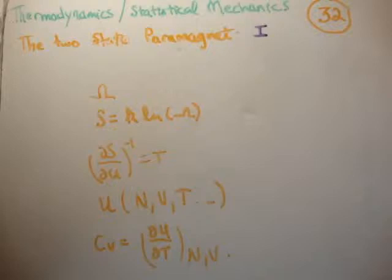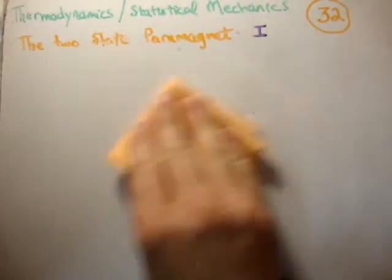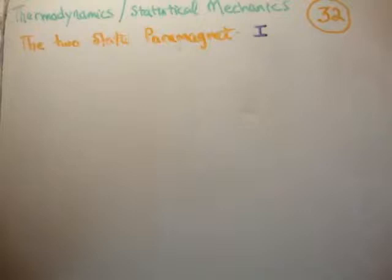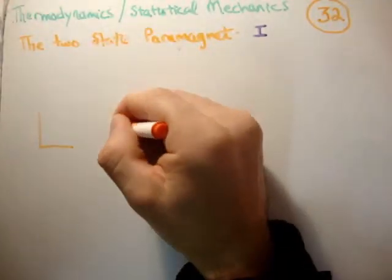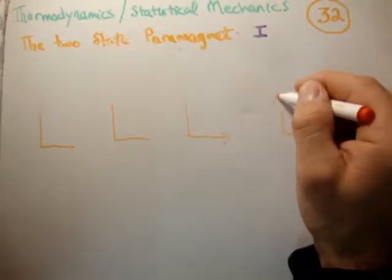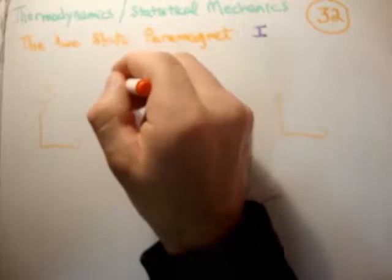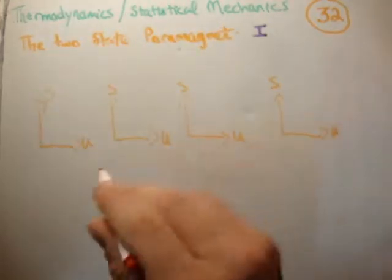I'm going to do this in two ways: numerically in this video, and analytically in the next video where we'll derive the functional form for heat capacity without any numbers. As a recap on entropy versus energy graphs, we saw four different types of entropy versus energy graphs.